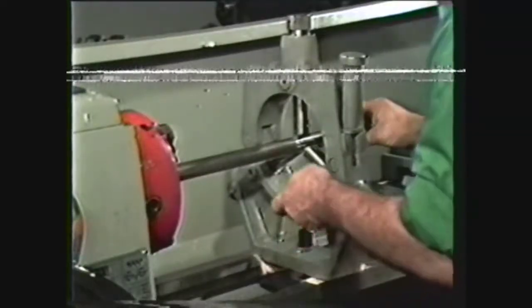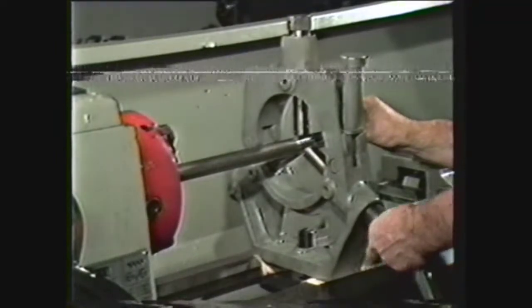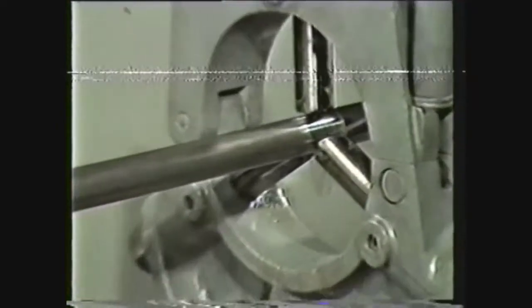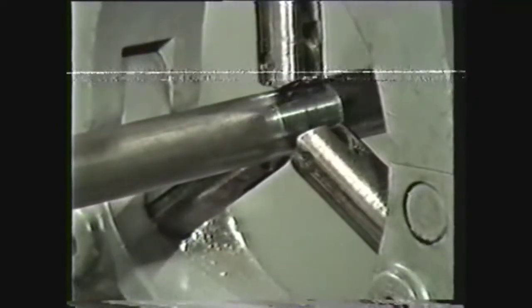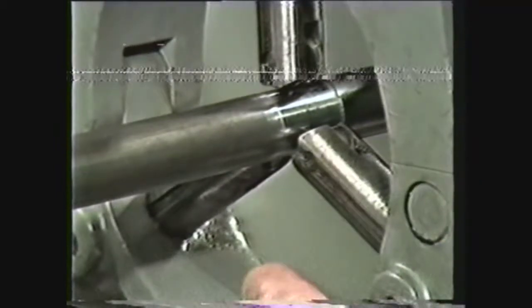Loosen the jaw locking screws and using a piece of cellophane or a 1/1000 feeler gauge, adjust the jaws to a slight drag. Then tighten the jaw locking screws. This should allow approximately 1/1000 between each jaw and the work.